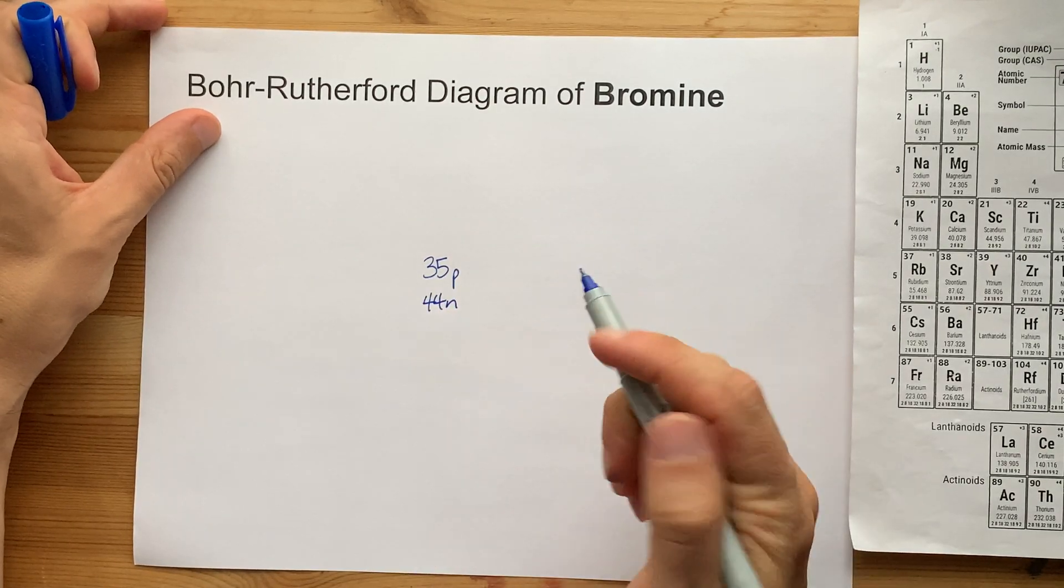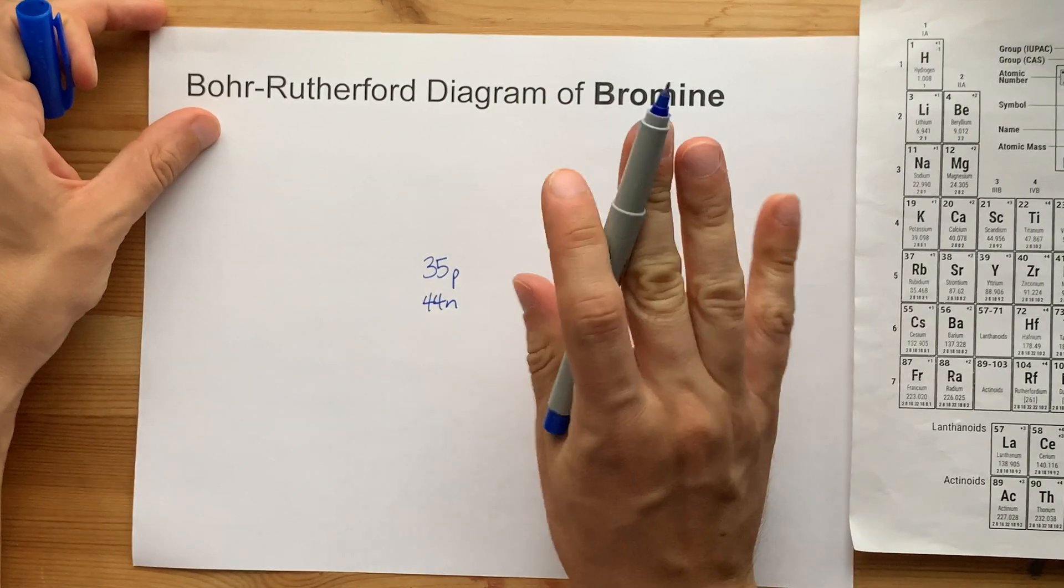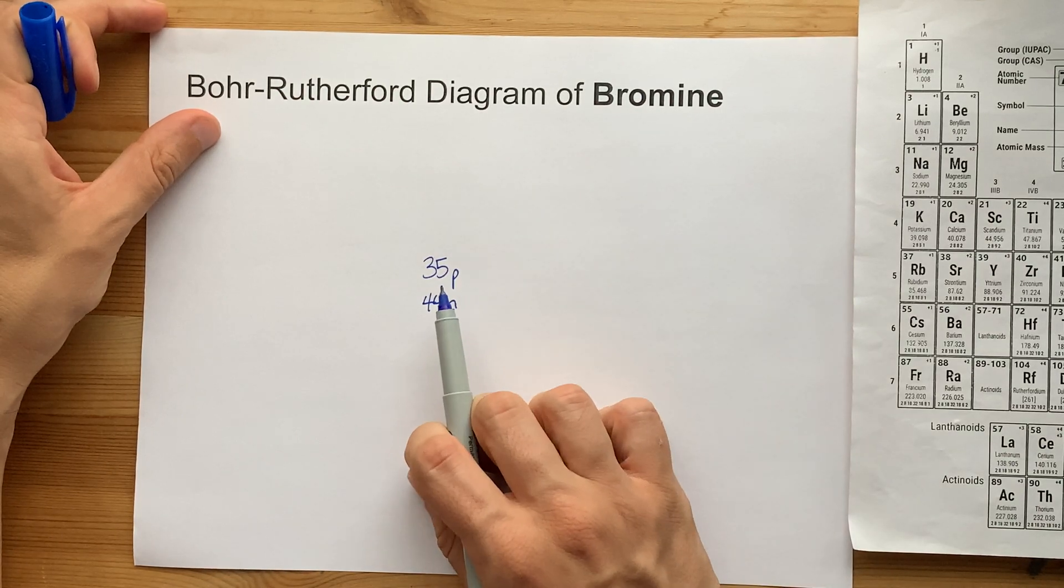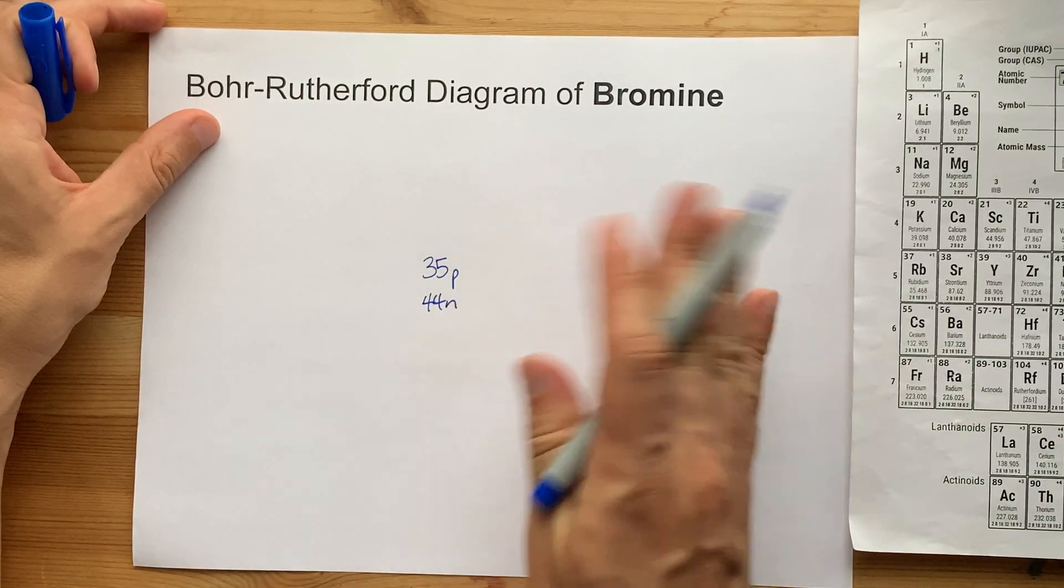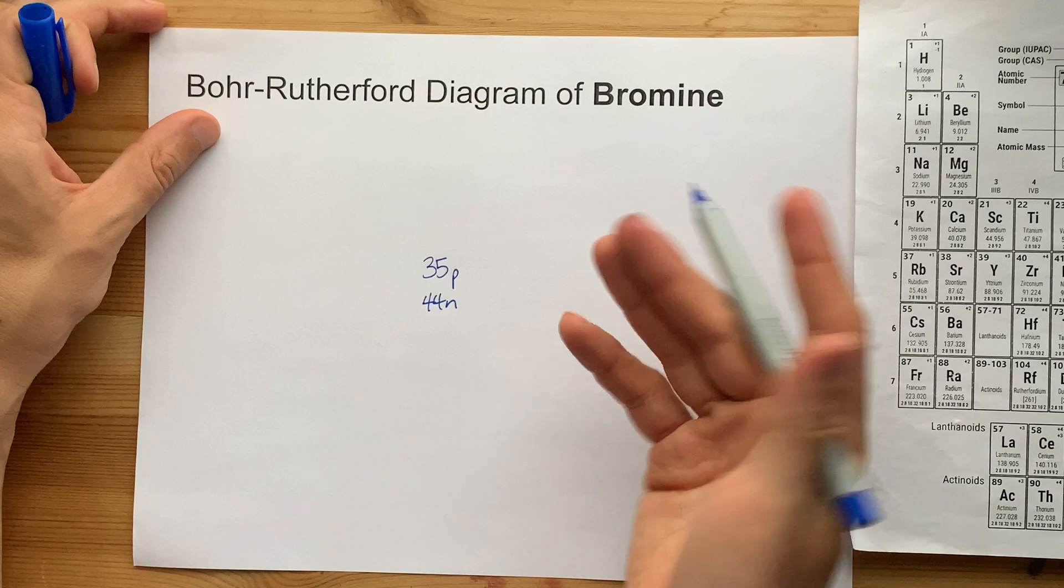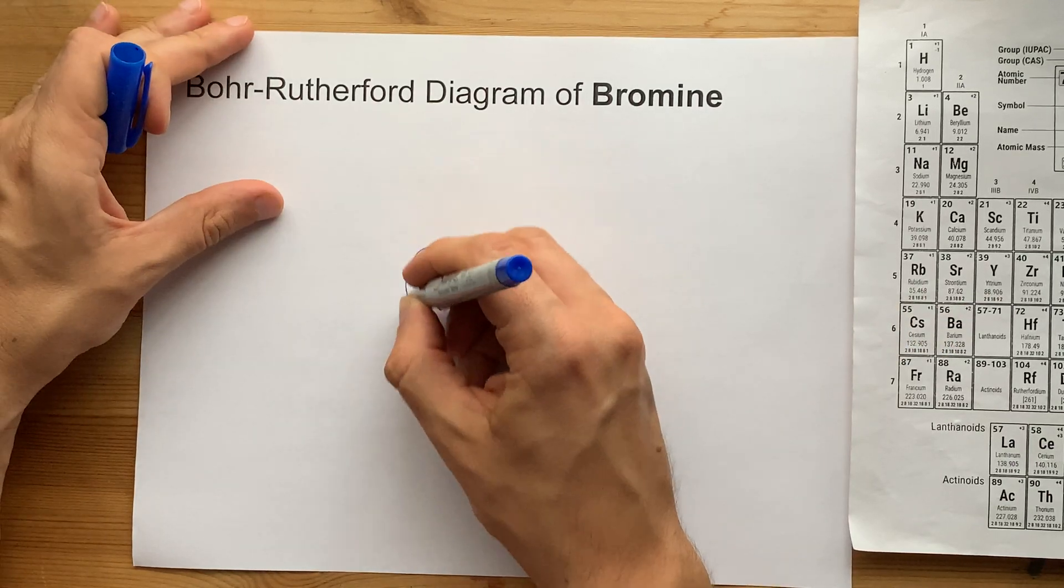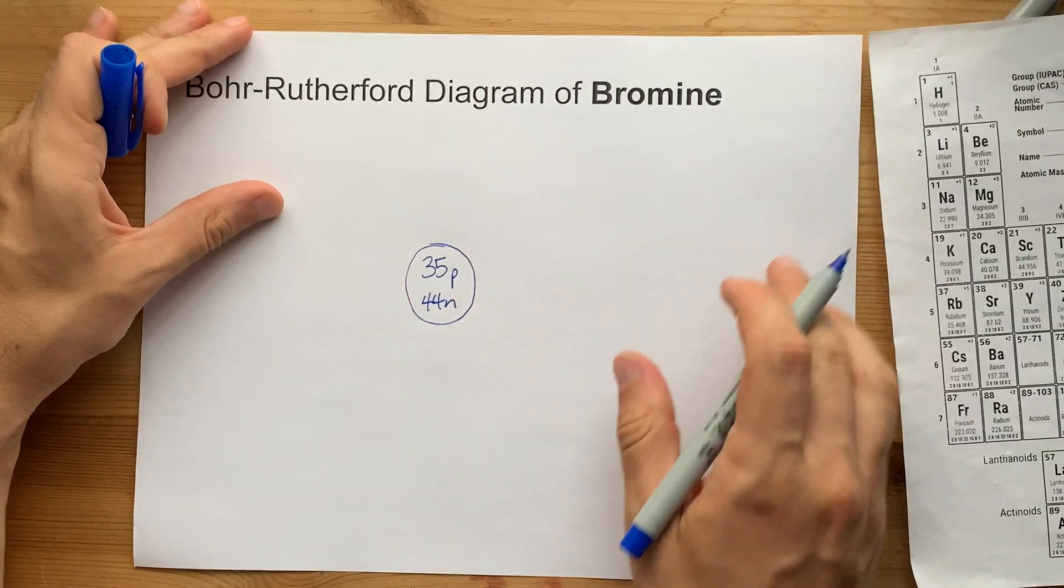The only options for bromine are 44 and 46 neutrons. If your teacher asks for 45, tell them that doesn't exist. I mean, it might, but it's radioactive or something. It's because of isotopes.